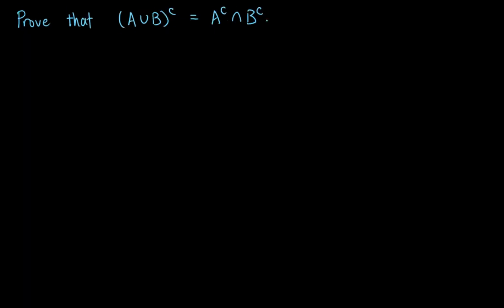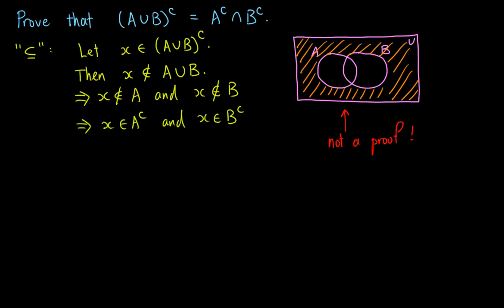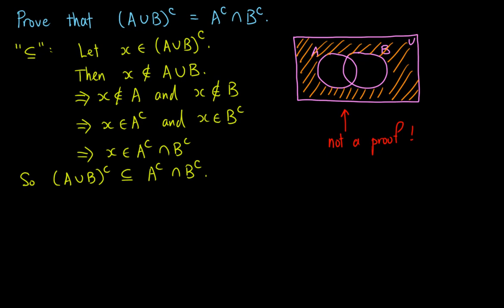Let's look at another proof using double inclusion. This time, we prove De Morgan's Law, which is another useful result in set theory. Let X be an element of the complement of A union B. By the definition of the complement, this means that X is not an element of A union B. At this point, it is useful to draw the Venn diagram to help us visualize, but bear in mind that a Venn diagram does not constitute a proof — it only helps us to think about the problem. To lie outside A union B, X must be both outside A and outside B. That is, X is not an element of A and X is not an element of B. So X is in A complement, and X is in B complement. In other words, X is in A complement intersect B complement. So one inclusion is done.